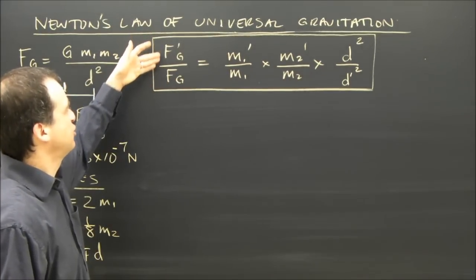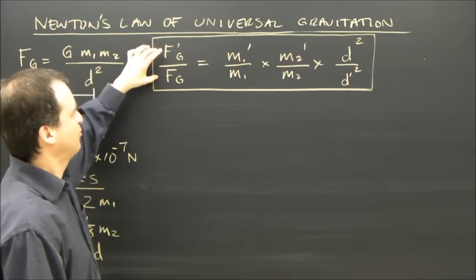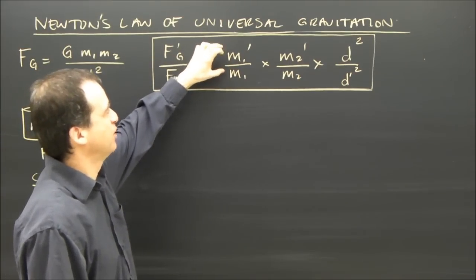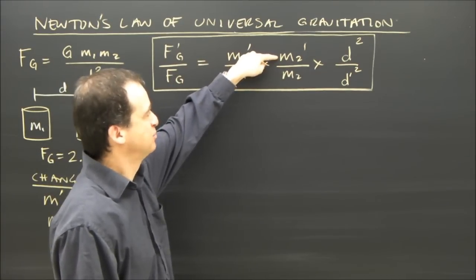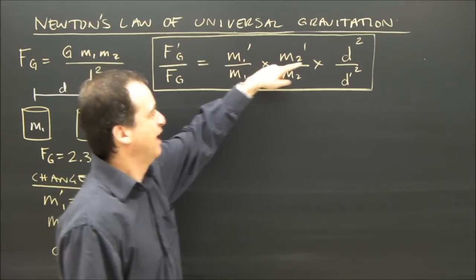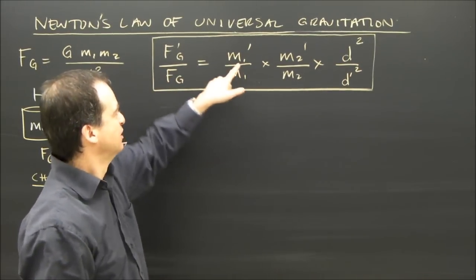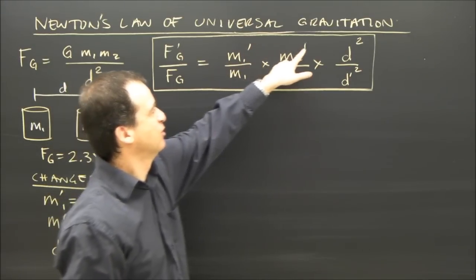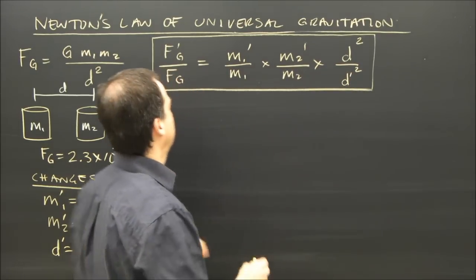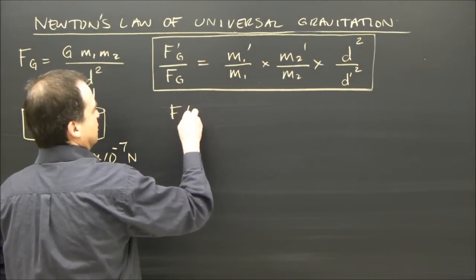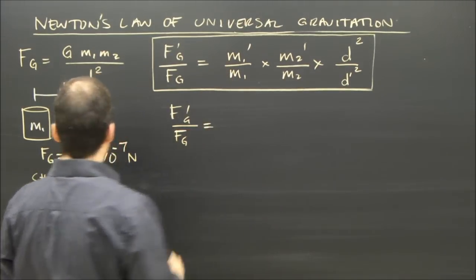Here's the formula. The ratio of the new gravity to the old gravity is dependent on what happened to the first mass — m1 prime over m1 — how mass two changed — m2 prime over m2 — and what happened to the distance. The distance is inverse square, so the new distance prime is up in the numerator here, but it's in the denominator in the formula. Make sure you don't forget that. So let me put my numbers in.